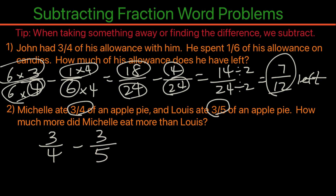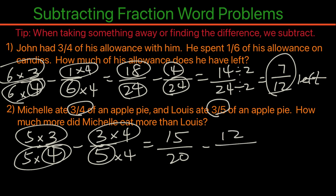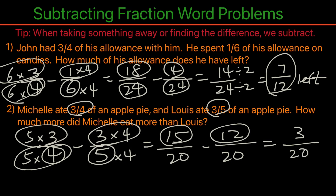Here we also have a situation with unlike denominators, so we'll do the same. The four will multiply by five and the five will multiply by four, and do the same in the numerator as we did in the denominator. Now we rewrite: five times three is 15, five times four is 20. Minus three times four is 12, five times four is 20. Now 15 minus 12 is 3, and the common denominator is 20. So the answer is 3 twentieths more than Louis.